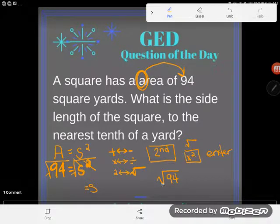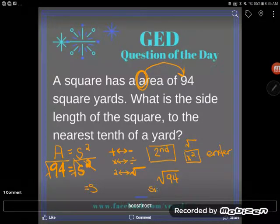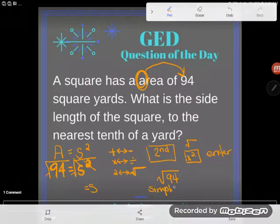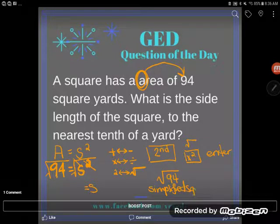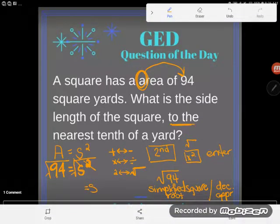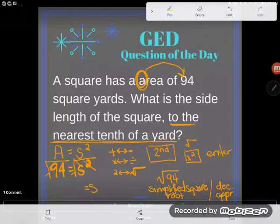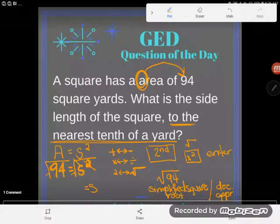My calculator gave me exactly what I typed in. It came right back out with the square root of 94. What my calculator did was give me a simplified square root. But what I want for my answer is I want a decimal approximation. You know how I know that? I want a decimal approximation because of this language. See this language: to the nearest tenth of a yard. That rounding language right there gives me a clue that I wanted a decimal answer.